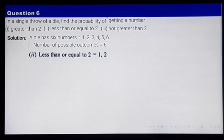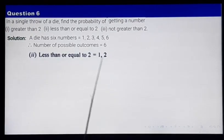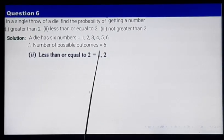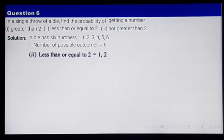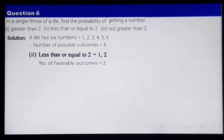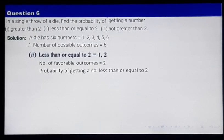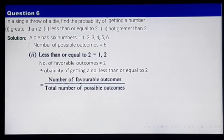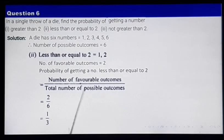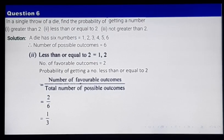The number of favorable outcomes is 2 — either 1 or 2, so together 2 favorable outcomes. The probability of getting a number less than or equal to 2 equals: number of favorable outcomes is 2 and number of possible outcomes is 6. After cancellation, you get 1 by 3.